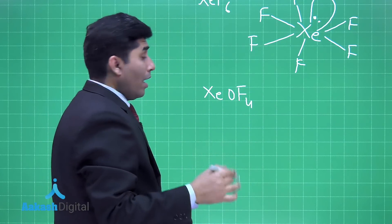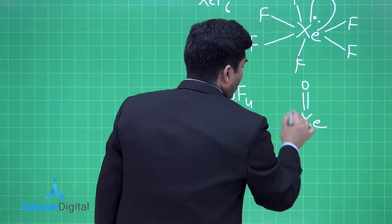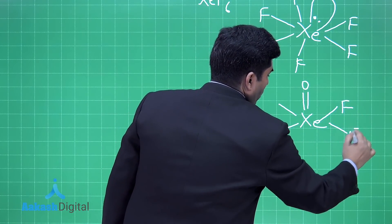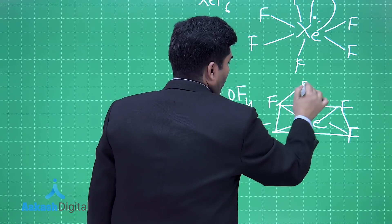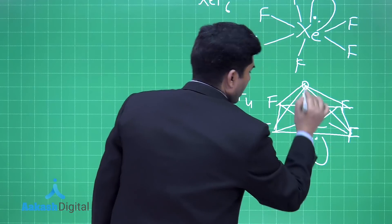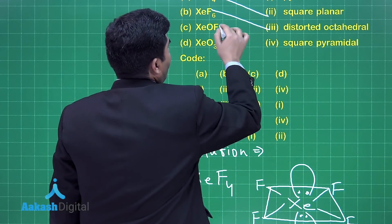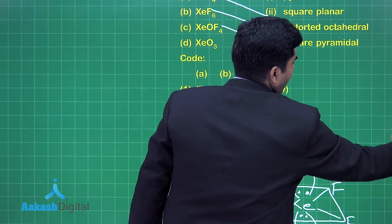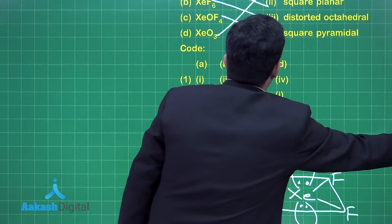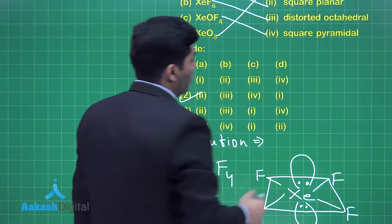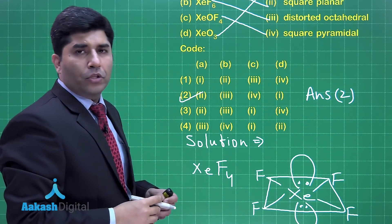Now let's talk about XeOF4. Xenon has eight valence electrons: one double bond with oxygen and four bonds with fluorine. This gives a square base, and with the lone pair it becomes a square pyramid. So XeOF4 is square pyramidal. The correct answer is option number two.